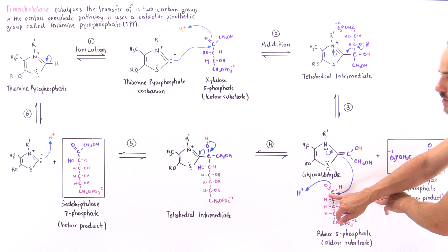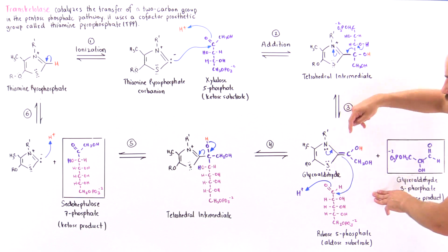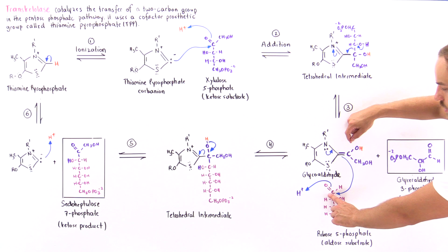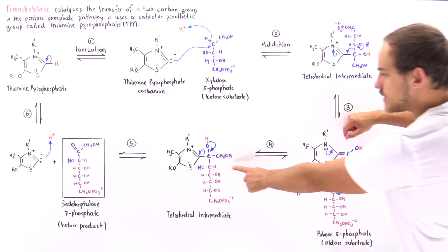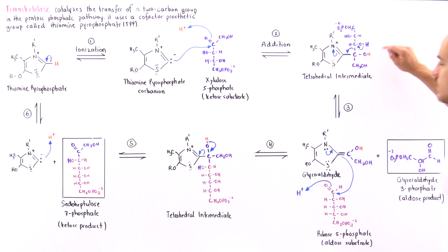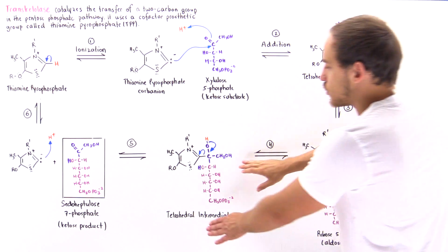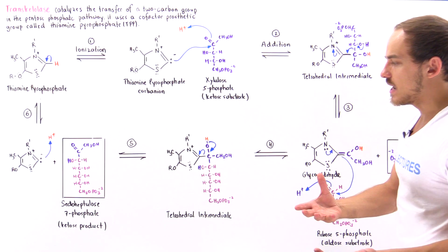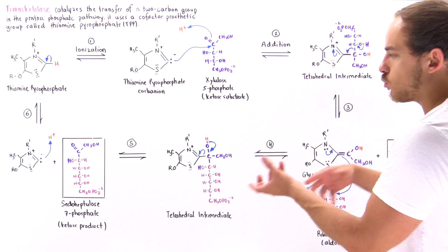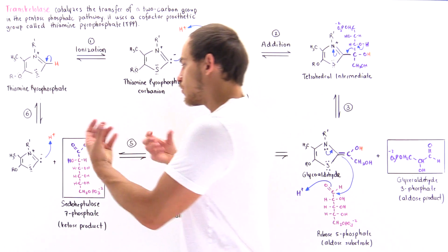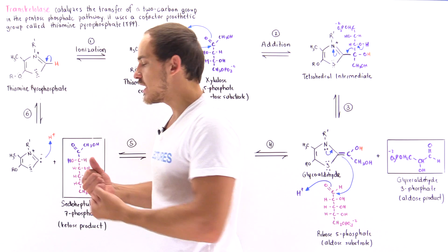This forms a sigma bond between the carbon of ribose-5-phosphate and this carbon, giving us another tetrahedral intermediate. Again, this tetrahedral intermediate is not very stable, and a rearrangement will take place to create more stable molecules.